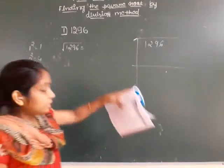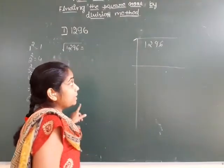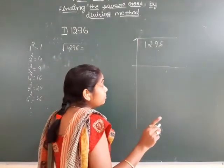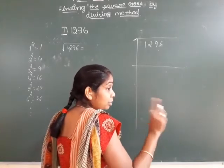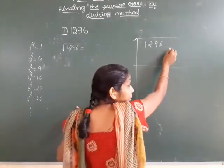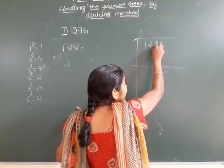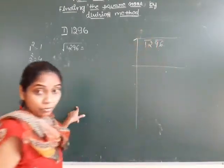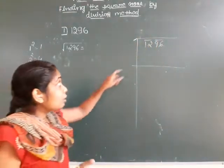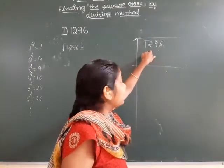So here I've written 1296. The first step is we have to make a group for each two numbers from your right side. So 6 and 9 is one group. 2 and 1 is one group. So the first group number is 12.